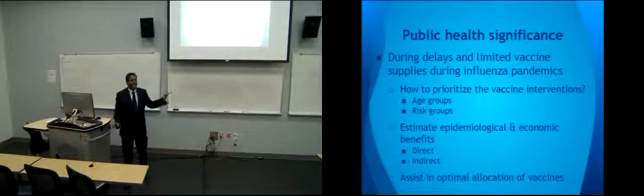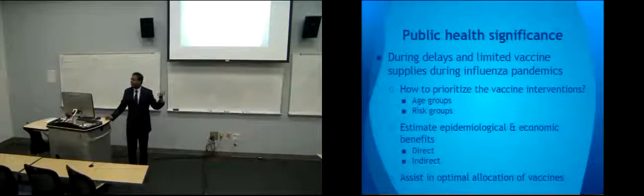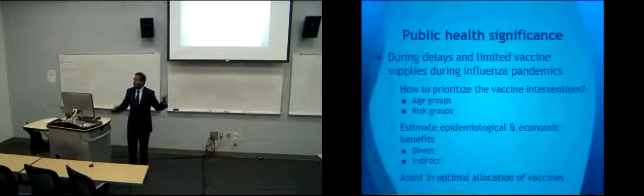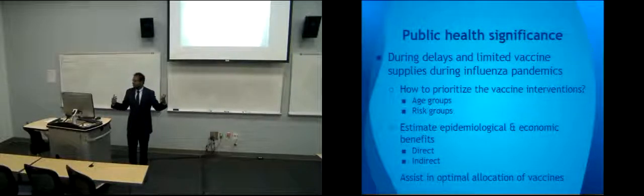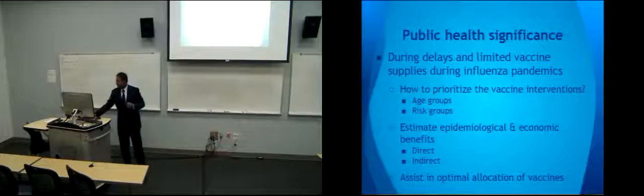So the key questions are: what happens during delays in vaccine introduction, how do you prioritize vaccination among different age and risk groups, and how can you quantify both the direct and indirect benefits to optimize the allocation of limited resources?